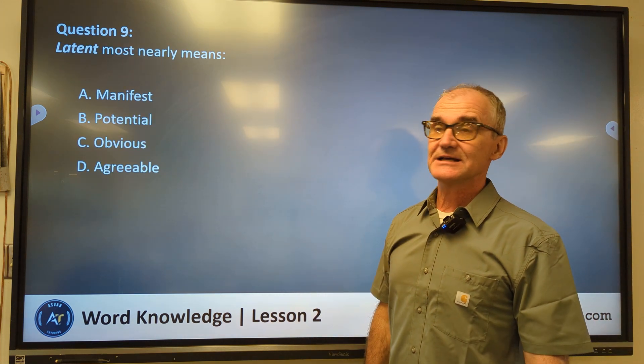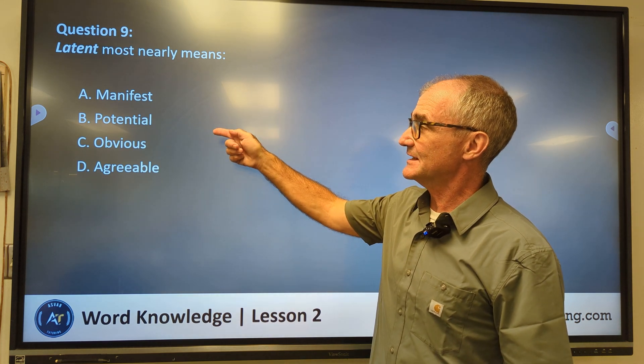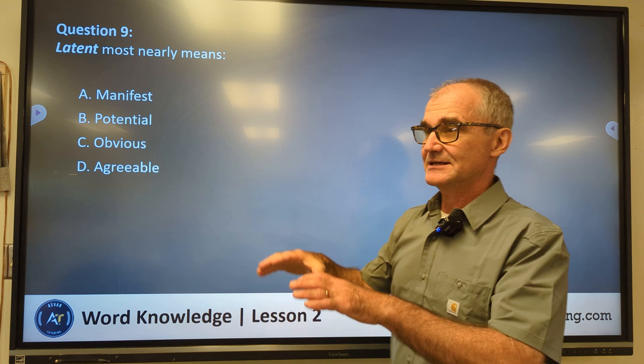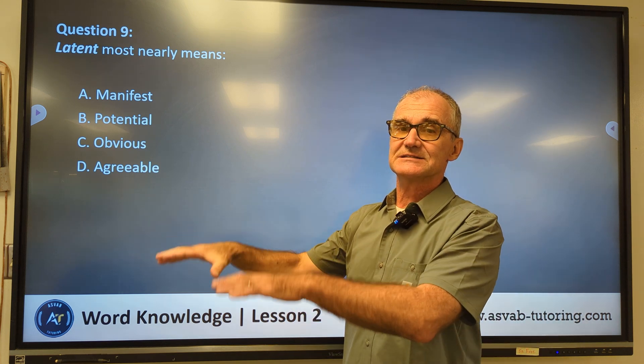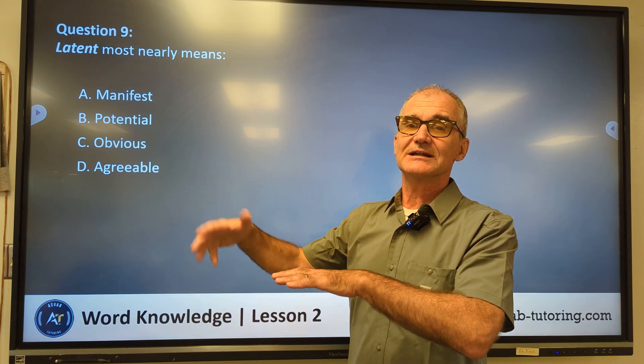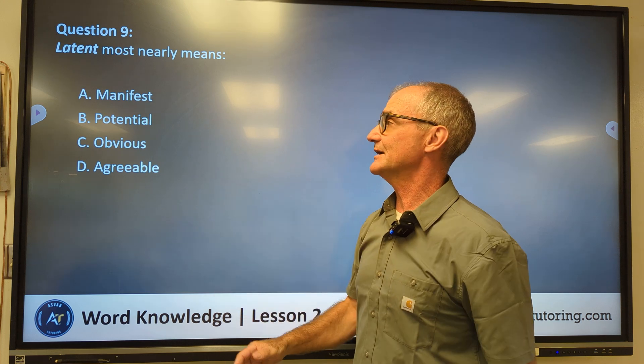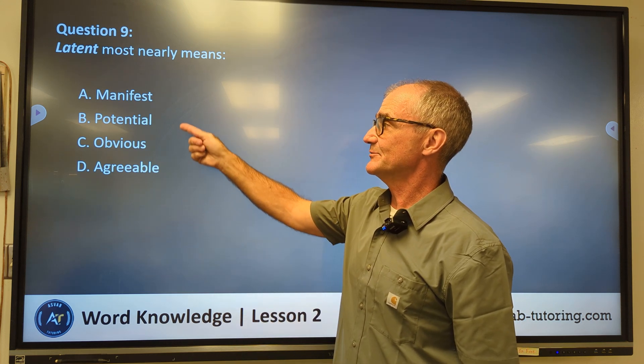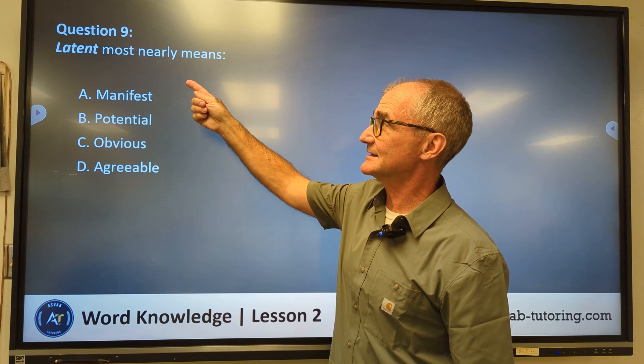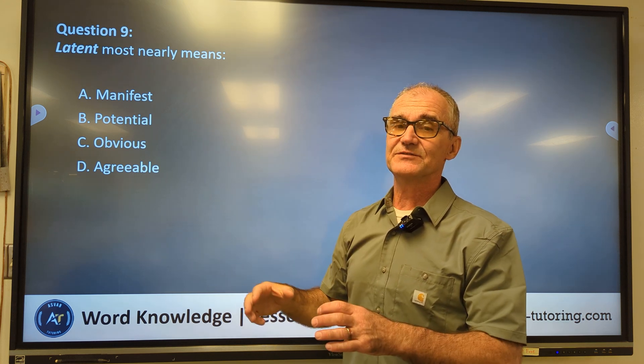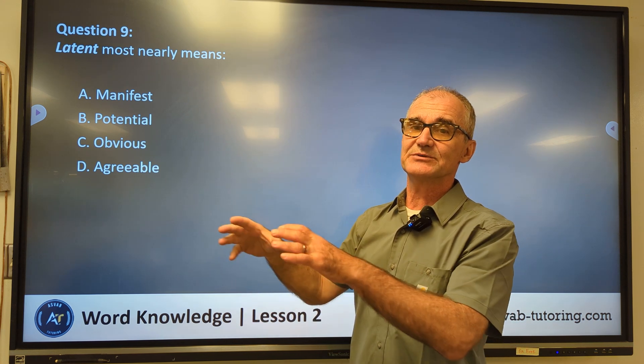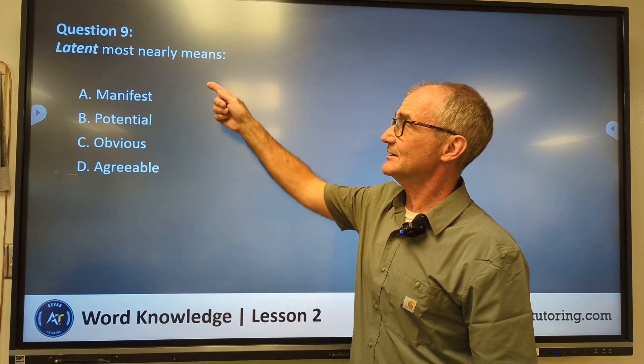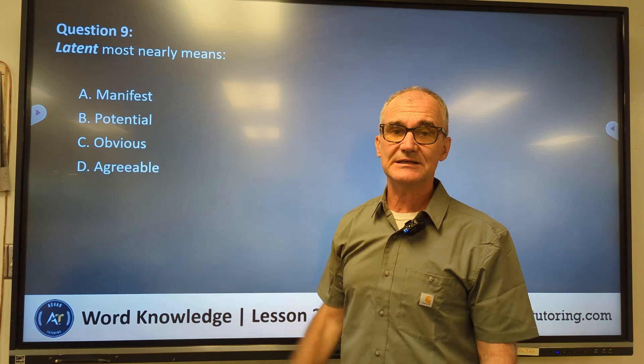Number nine, latent, manifest, potential, obvious, agreeable. Latent is, he might have a latent skill, meaning he hasn't figured out what that skill is. It's hidden away. Manifest, obvious, agreeable. They don't really make sense. Potential isn't exactly the same thing as latent, but it's very similar. He has a hidden potential, meaning it has not come out and been exposed yet. Correct answer for latent is B, potential.